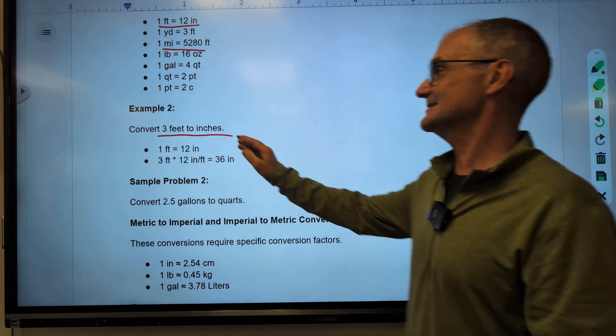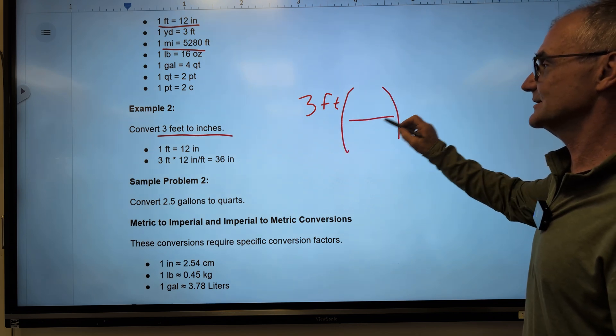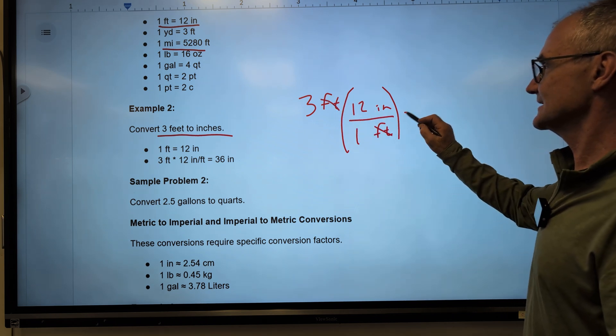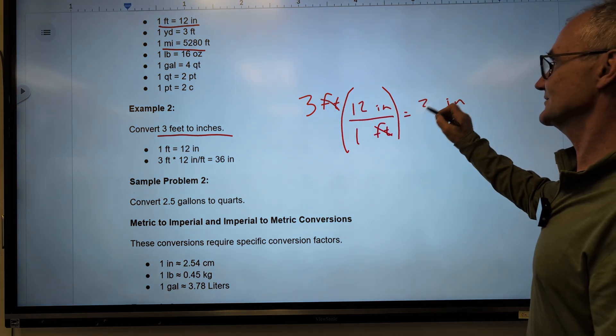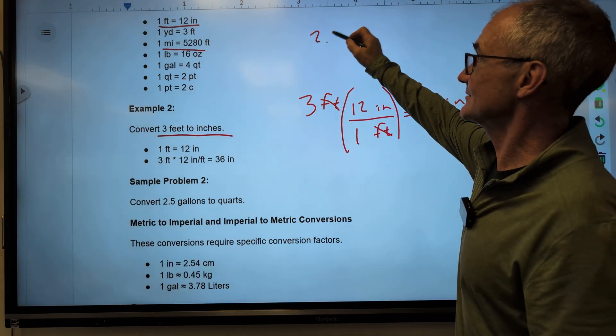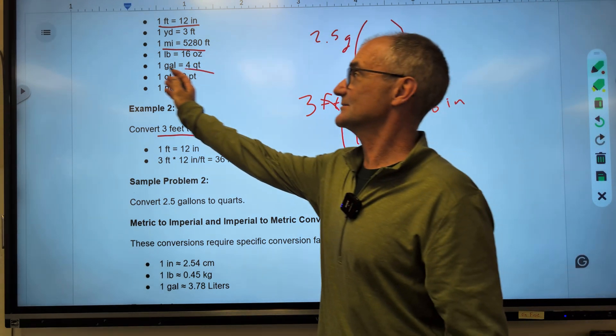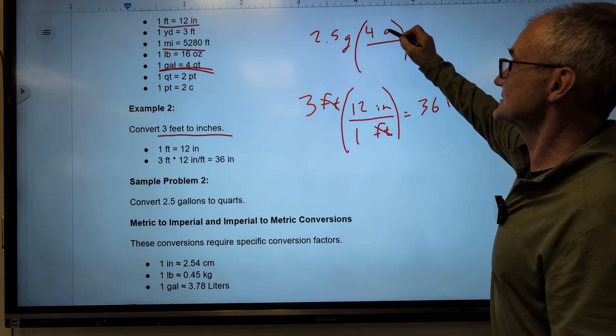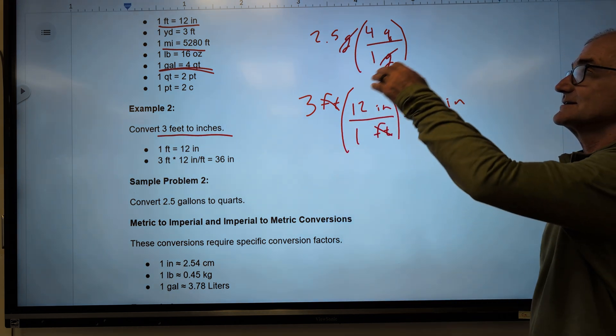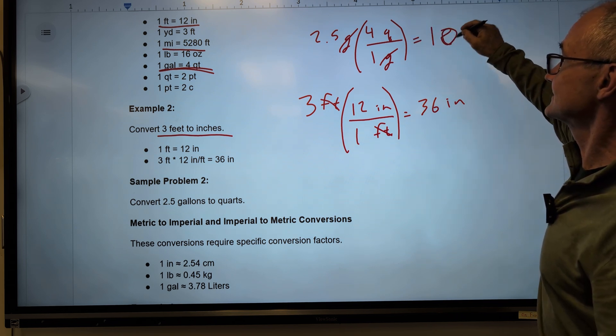So convert 3 feet to inches. I take my 3 feet, making sure I write my units down. I multiply by a factor of 1. 1 foot equals 12 inches. My feet cancel. That's going to give me inches. 3 times 12 is 36 inches. Convert 2.5 gallons to quarts. I start here with 2.5 gallons. I need to multiply it by a factor of 1. 4 quarts equal 1 gallon. My gallons cancel, that's going to give me quarts. 2.5 times 4 is 10. And that is the equivalent of 10 quarts.